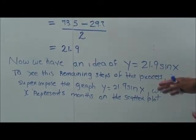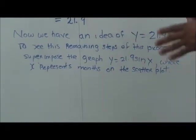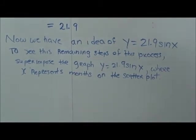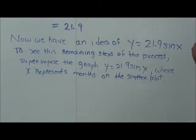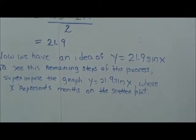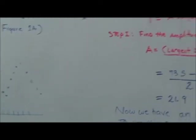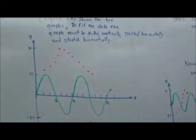To see the remaining steps of this process, we want to superimpose the graph of y is equal to 21.9 sine x, where x represents months on the scatter plot. So, look at this right here. This is figure 1b, and we tried to actually do this here. And we sketched this out, and it shows two graphs.